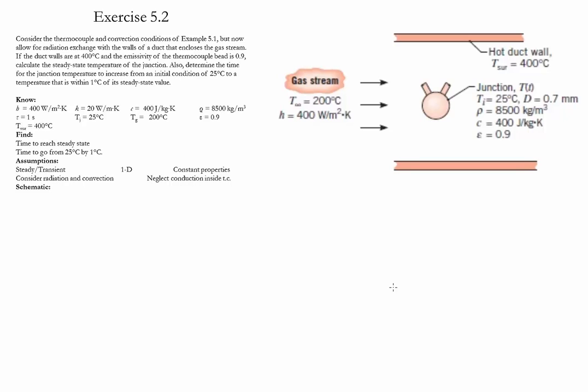Exercise 5.2. In this exercise we'll consider the same thermocouple as exercise 5.1. The difference is now we're going to allow for radiation exchange between the walls and the thermocouple. The temperature of the wall is given as 400 Celsius and the emissivity of the bead is given as 0.9. The first task is to determine the temperature reached at steady state conditions. The second task is to determine how long it takes the thermocouple to go from its initial condition of 25 Celsius to a temperature within one Celsius of its steady state value.